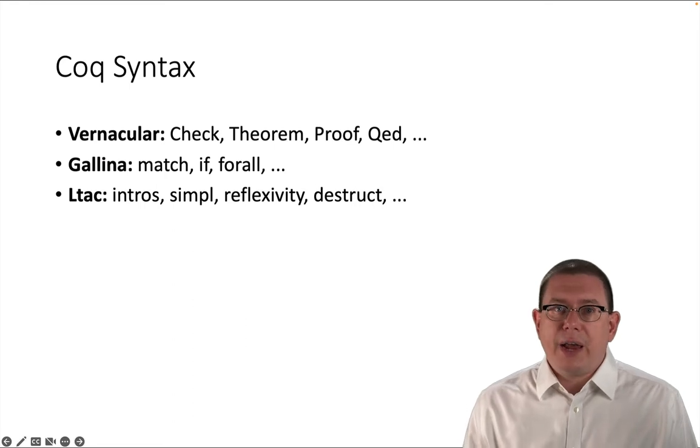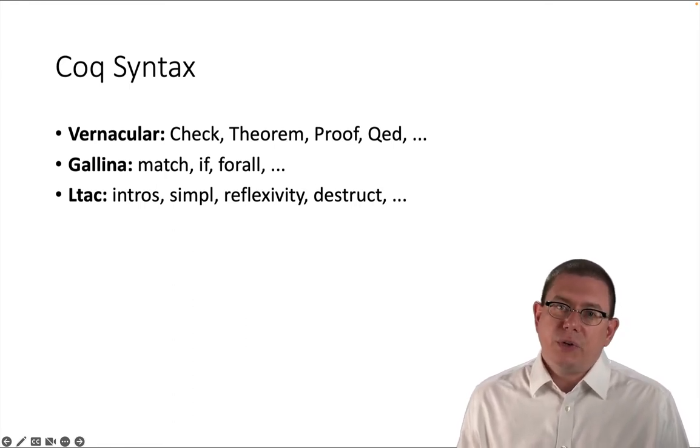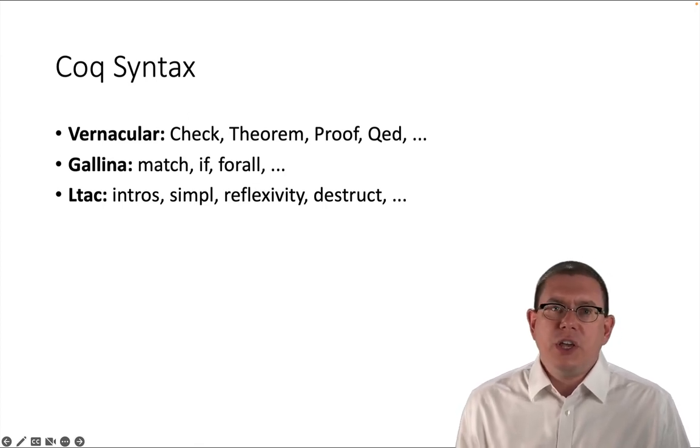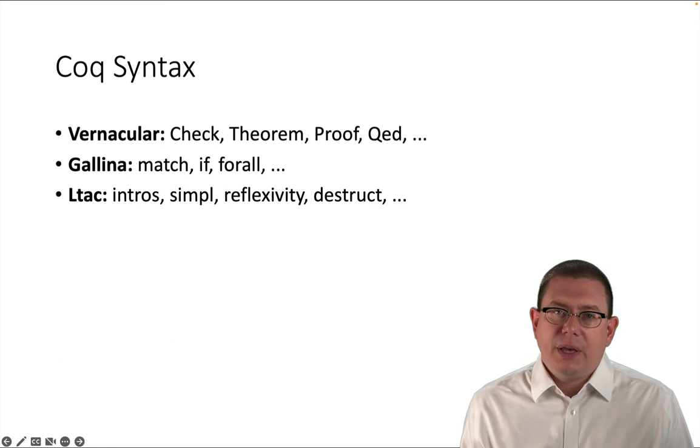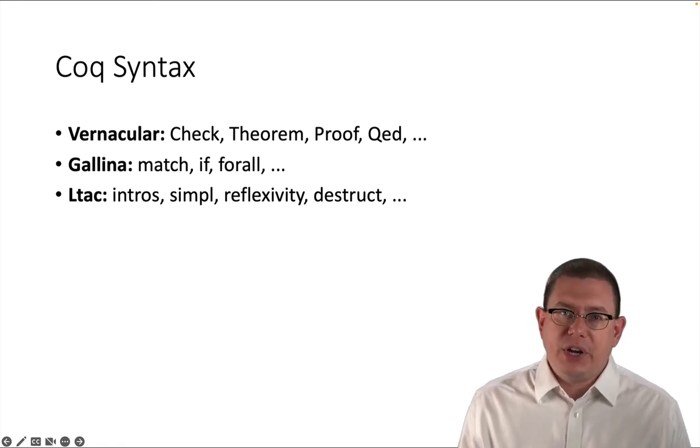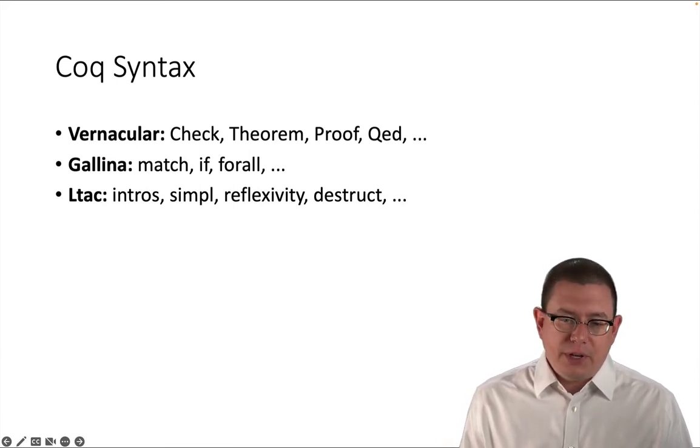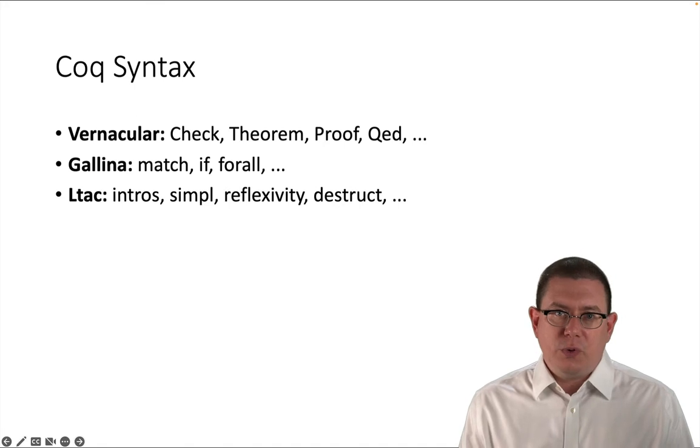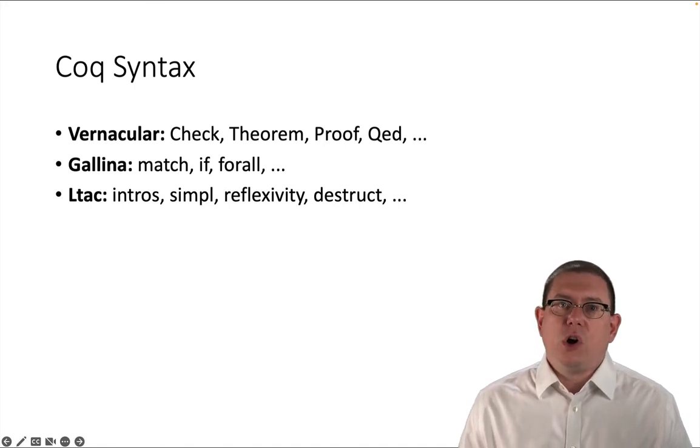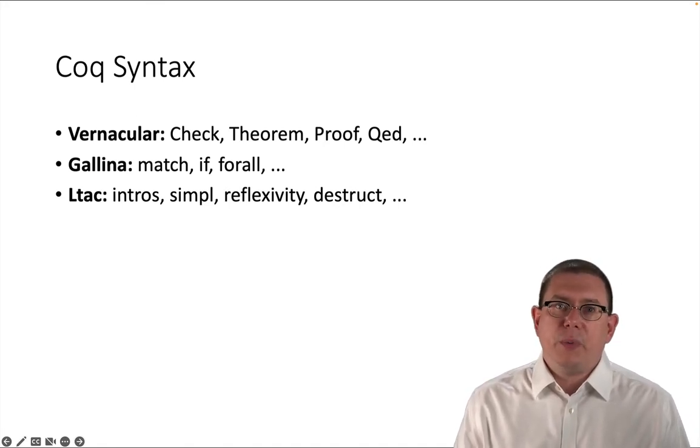So I've mentioned the vernacular before. That's where files get their .v extension. And these are these capitalized keywords that used to give commands to sort of change what Coq is doing. You can say check in order to tell it to run a command to type check something. You can say theorem to state a theorem and then to later on enter proof mode. And then later on after that, finish your proof mode with QED. So these are kind of the large level building blocks of how we interact with Coq.